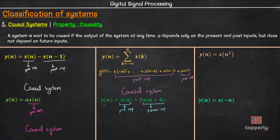Here the output at instance n depends on the input at the instance n plus 4. That means present output depends on an input in the future. Therefore, this is a non-causal system.